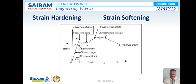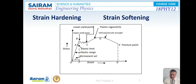Strain hardening is also referred to as the process of making a metal harder by plastic deformation. It is also considered as work hardening. For certain materials such as concrete or soil, the stress-strain curve will be typically as shown in the picture. Here, the curve will have a negative slope. The negative slope indicates that there is a softening effect of the material over a particular range. This effect is considered as strain softening.